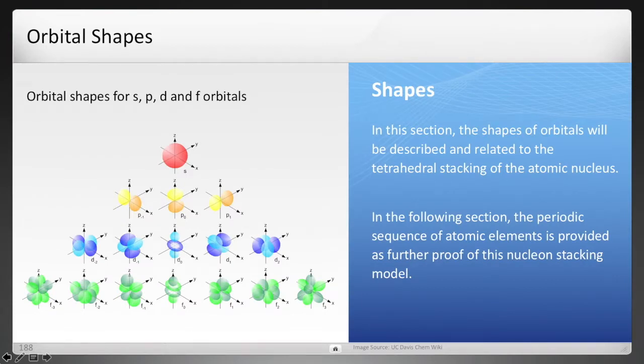But first off the shapes. The s-orbital top of the pyramid here is in red. It's spherical. P is in yellow. D orbital in blue. F orbital in green. And these are the shapes of the atomic orbitals and the path of the electron.